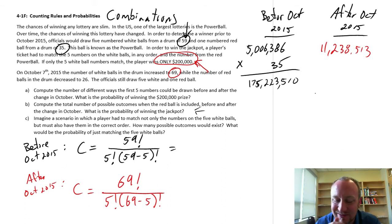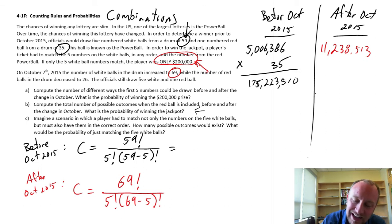So the odds of winning are tiny. What if we look at after, the change in October 2015? So now after that, the number of red balls has decreased to 26. So if we times this by 26.